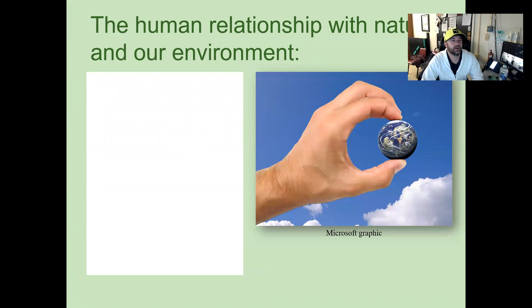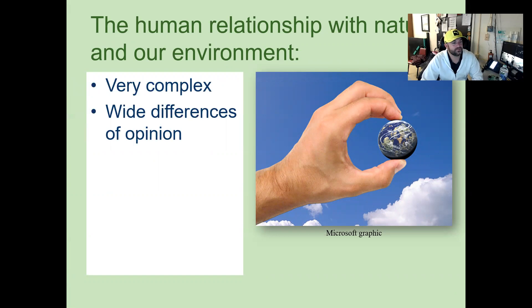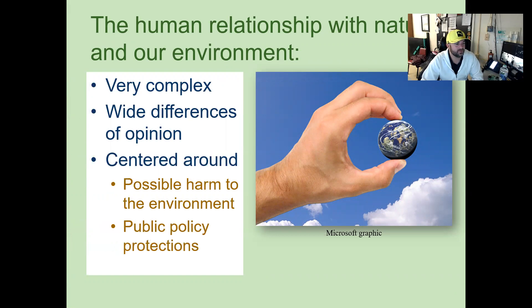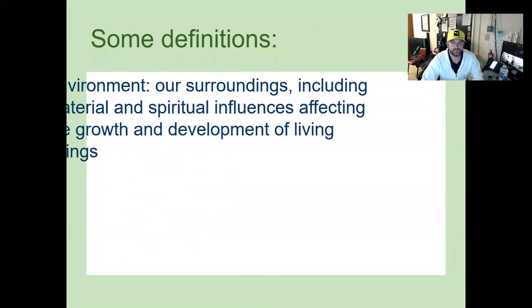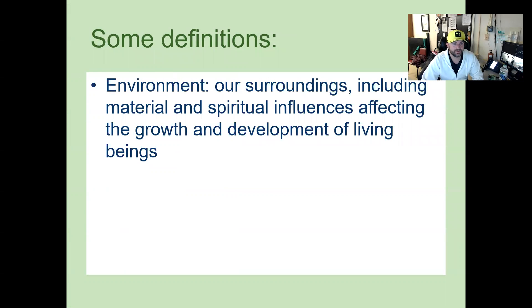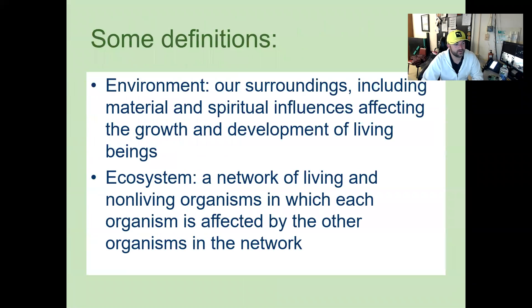So the relationship with nature and our environment is very complex, with a wide difference of opinion — we definitely see that these days — centered around possible harm to the environment and public policy protections. Some definitions to remember here: environment, which is our surroundings including material and spiritual influences affecting the growth and development of living beings; and ecosystem, a network of living and non-living organisms in which each organism is affected by the other organisms in the network.